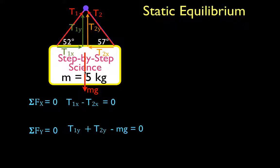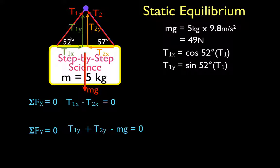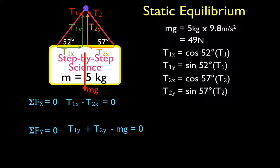Using our trig functions, sine and cosine, we're going to write terms for T1x, T2x, T1y, and T2y. First, mg is simply the mass times the acceleration due to gravity, which is 49 newtons. For T1x, it's adjacent to the 52-degree angle, so T1x equals cosine of 52 times T1. T1y is opposite, so T1y equals sine of 52 times T1. We do the same for the x and y components of tension number two.